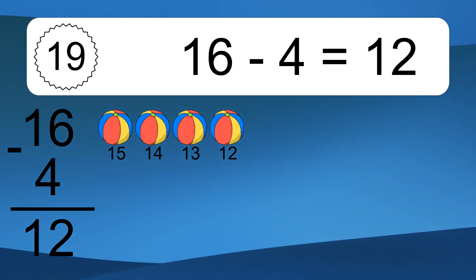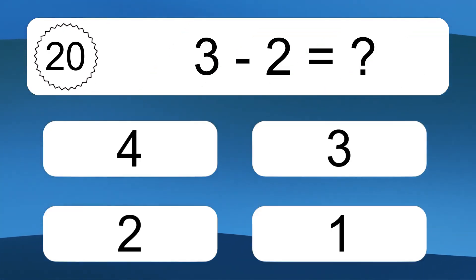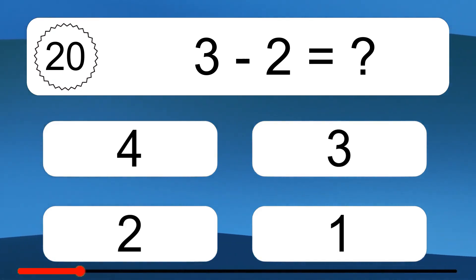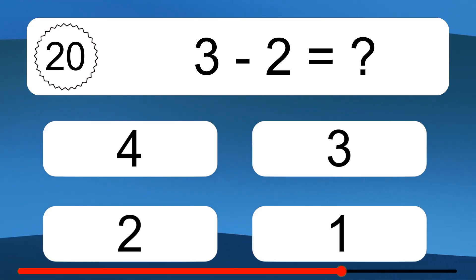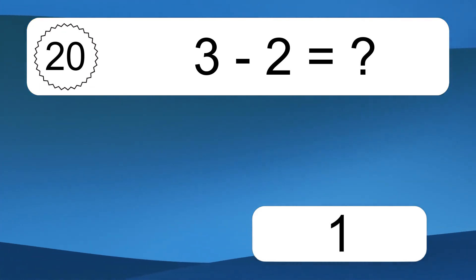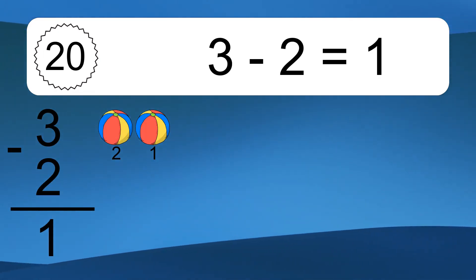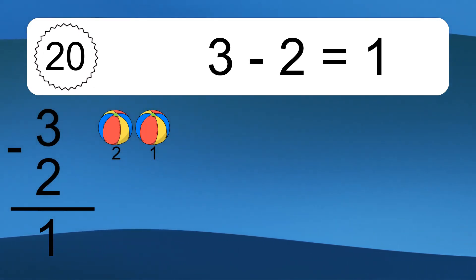3 minus 2 equals what? 3 minus 2 equals 1. Let's count it: 2, 1.